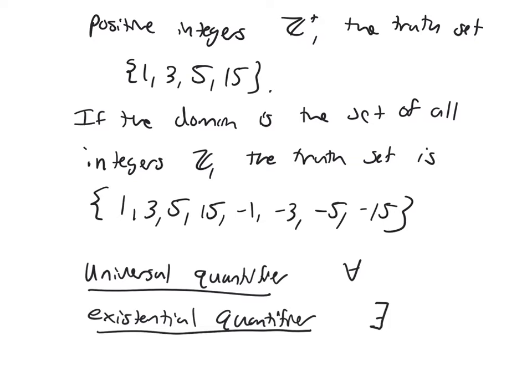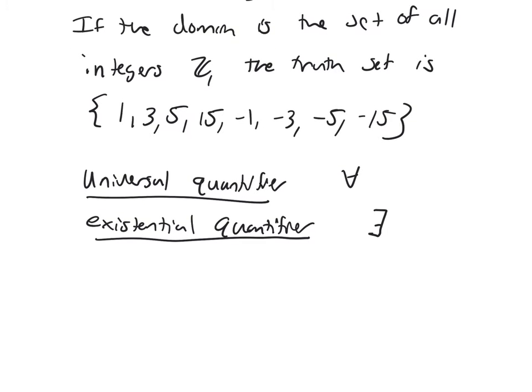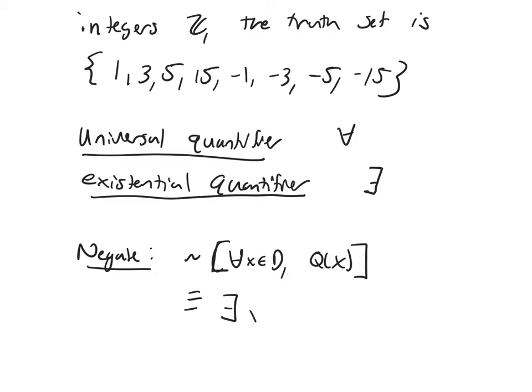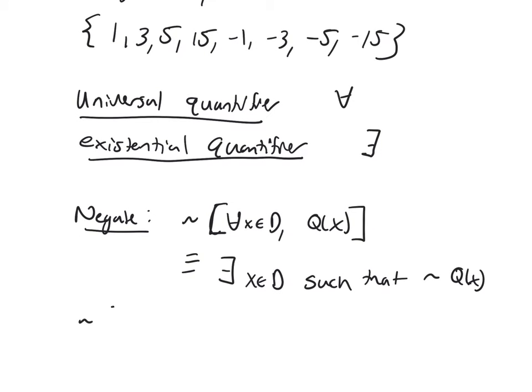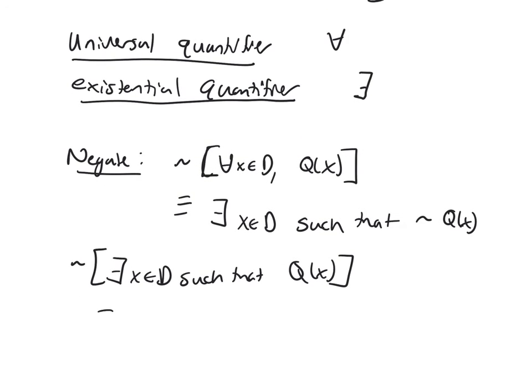When we want to negate statements that have quantifiers in them, let's remember how that goes. When I negate a universal 'for all x in D, Q(x)', you flip the quantifier so it becomes existential: 'there exists an x in D such that not Q(x)'. And when we negate an existential, it's going to flip to become a universal. So when I negate the existential, I get 'for all x in D, not Q(x)'.